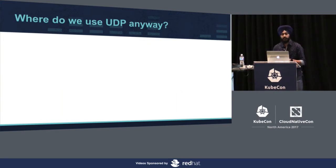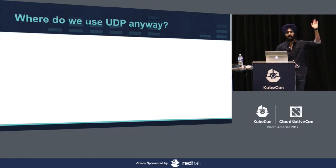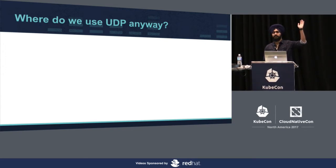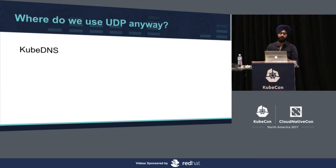So where do we use UDP anyway? With a show of hands, how many people here are using Kubernetes — not necessarily in production? And how many of you are using UDP in Kubernetes? The rest of you are not running KubeDNS. The most common use case where almost all of us are using UDP in Kubernetes is KubeDNS.